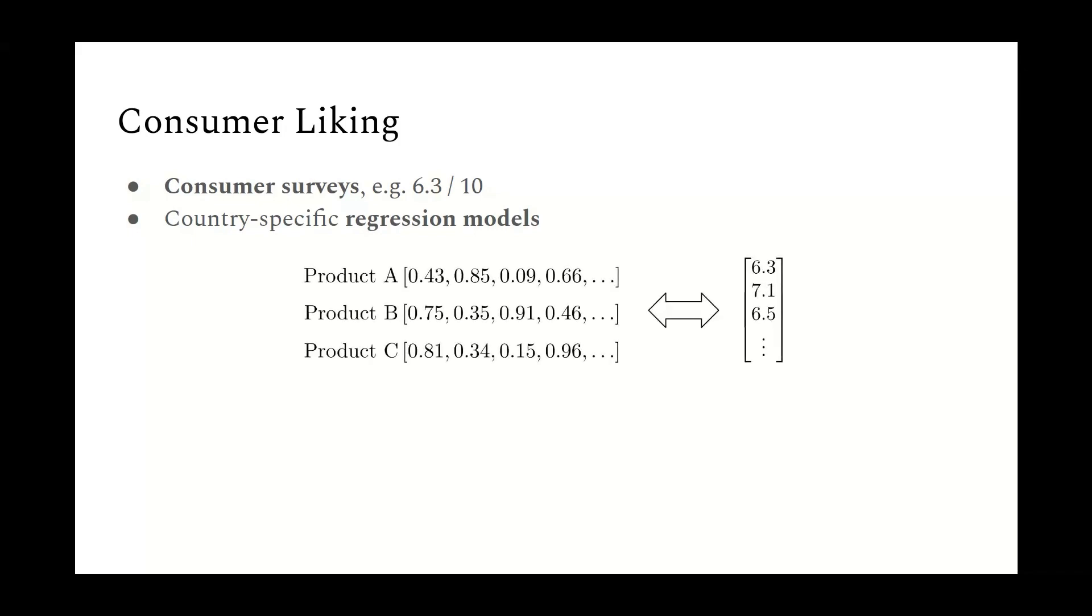Basically, you ask groups of consumers to try each product, and then they give it a score out of 10. But one of the issues is that consumer surveys are very expensive, and you can't keep going back and forth when you're designing a new product. So you use something called a regression model to predict what consumers will think, rather than actually asking them what they think. And so the basic idea is that you can stack all of your sensory attributes into a matrix on the left-hand side, and then on the right-hand side, you can have a vector of your known consumer-liking scores, and you can develop a regression model on this basis.